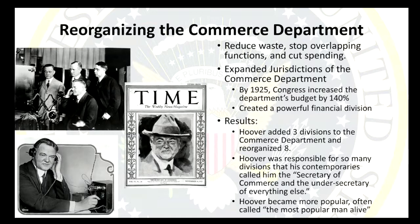Because all this new technology was coming out, he made a case to Congress that he should be in charge of those things. By 1925, Congress increased his appropriations — how much money they gave the agency to run — by 140%. That's like saying if you had $1, now you have $2 and change. He was also able to create a really powerful financial division. As a result, he added three divisions and reorganized eight divisions of the Commerce Department.